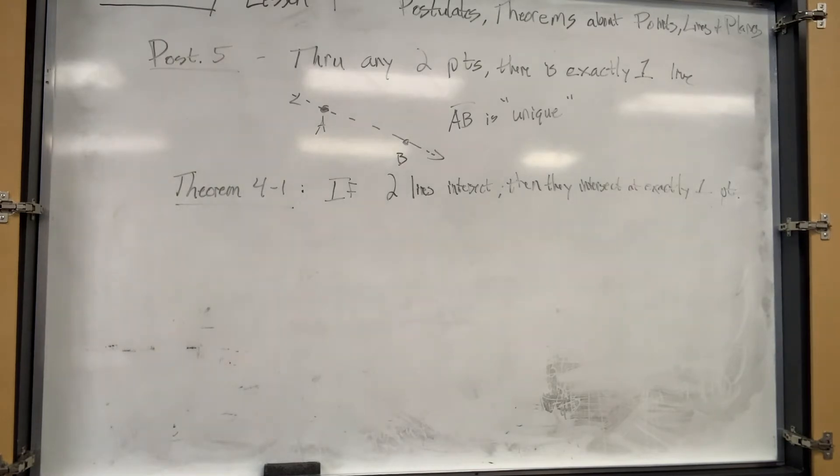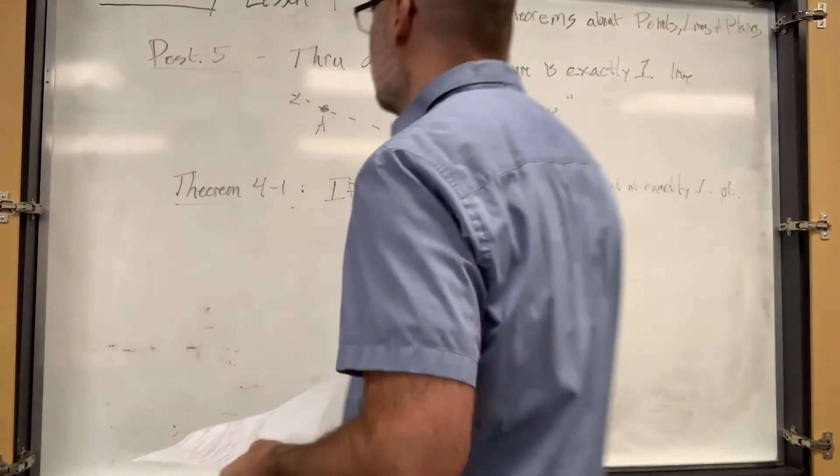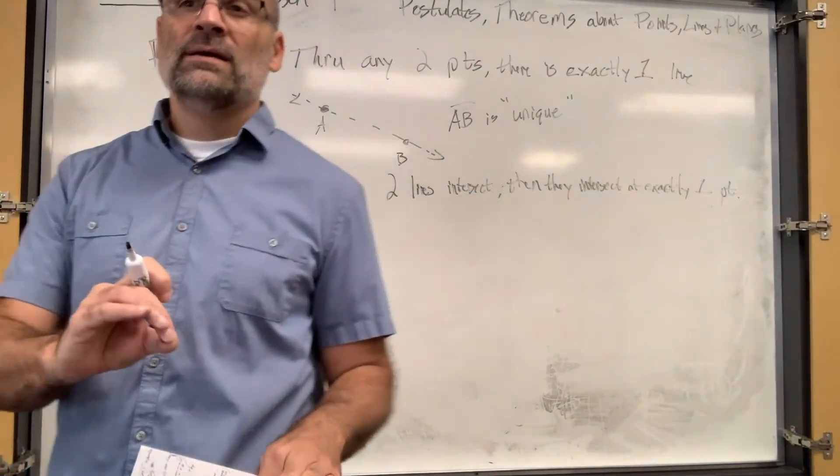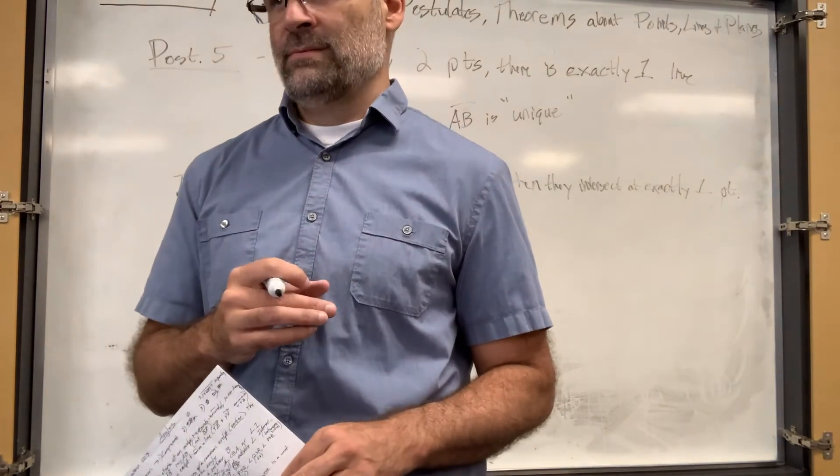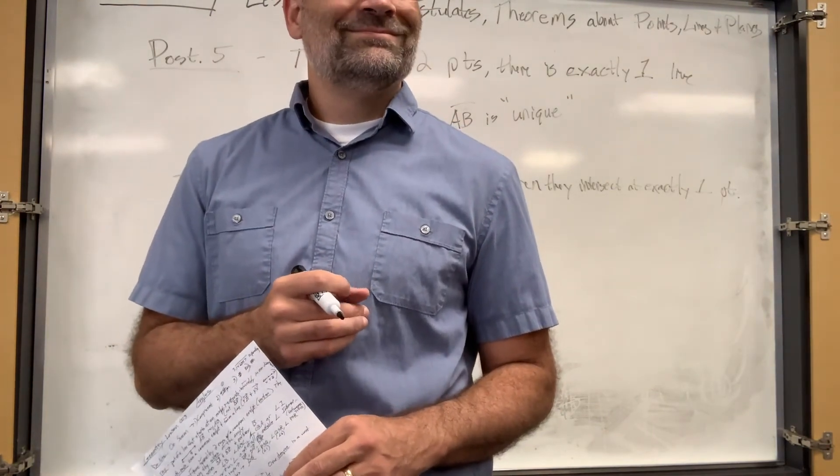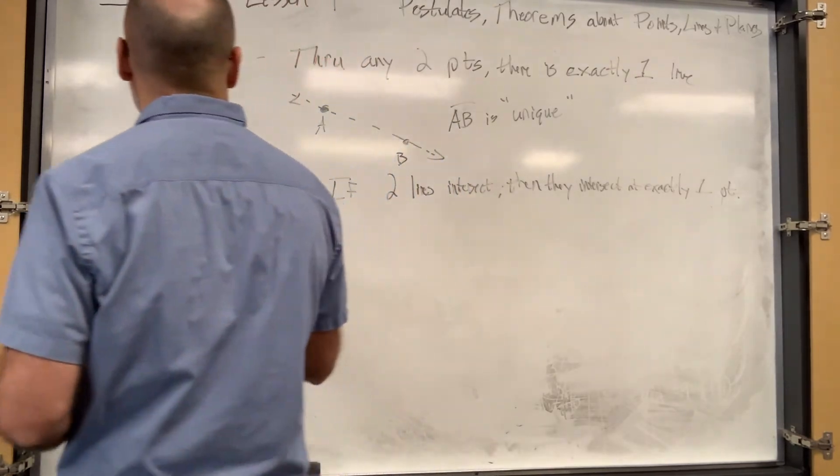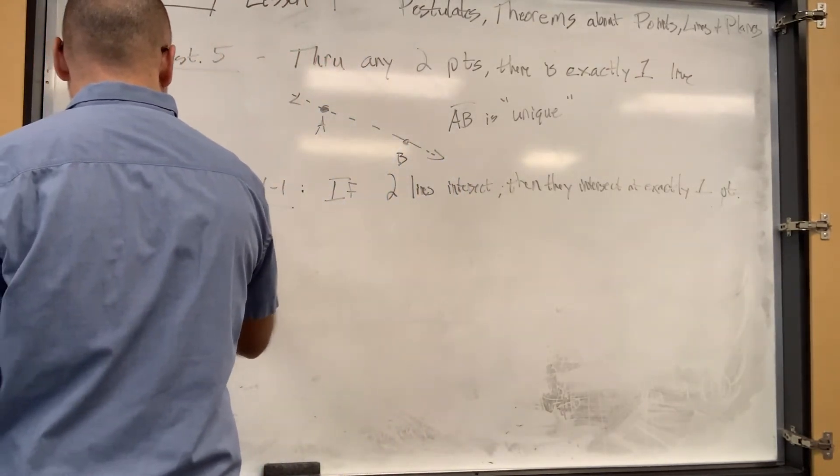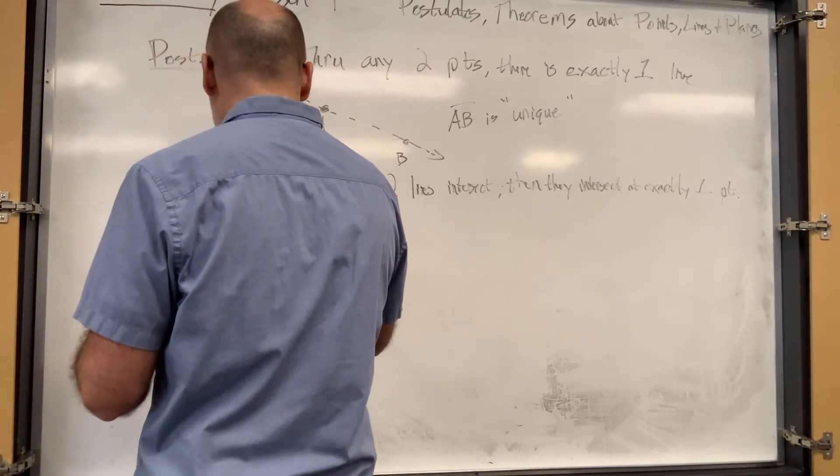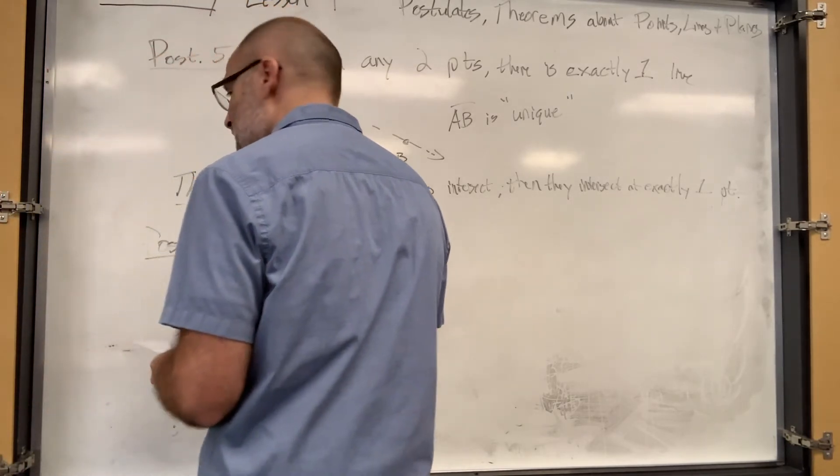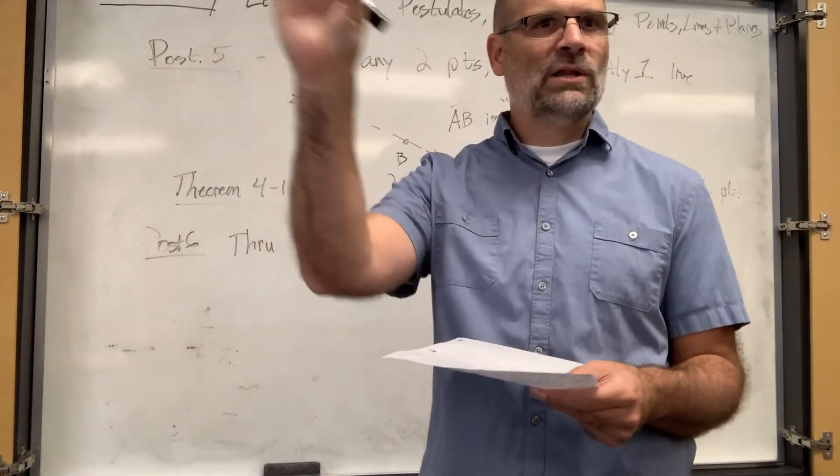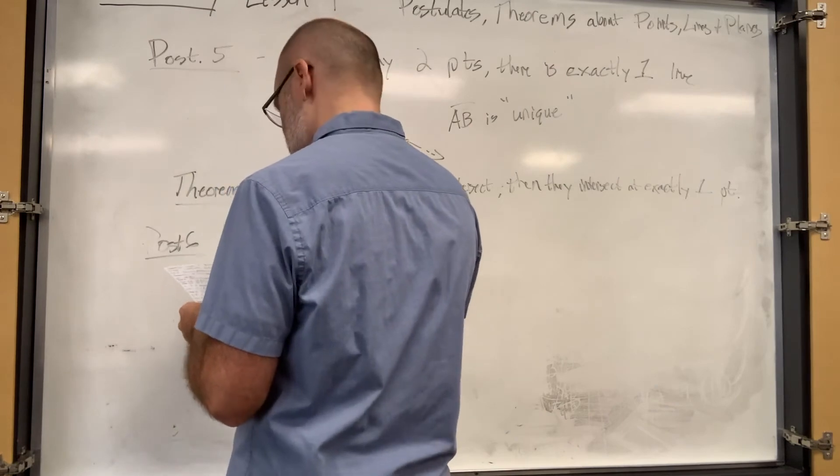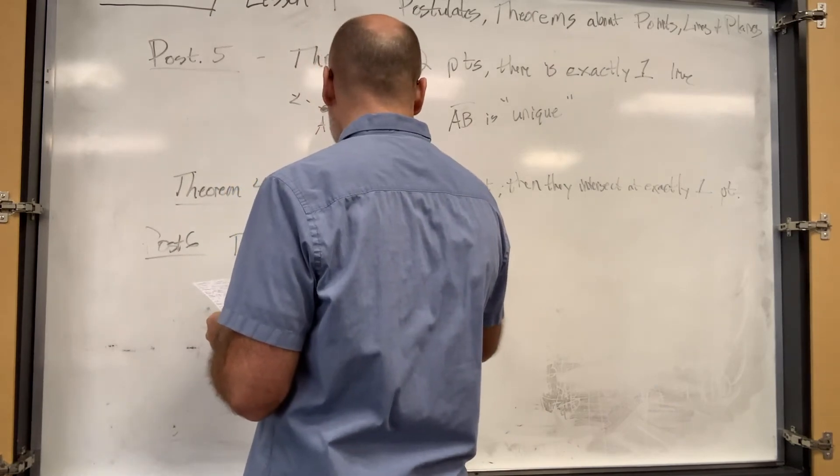Moving on, postulate six. If two points determine a line, only one line, then how many points do you think will determine a plane? Three. Just go up one dimension. Postulate six says: through any three non-collinear points—you have to say non-collinear because if they're on the same line, then that's not going to prove much—through any three non-collinear points...